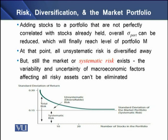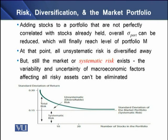However, the market or systematic risk still exists in the portfolio because the variation and uncertainty of macroeconomic factors affects all risky assets and cannot be eliminated. In the diagram, the vertical axis shows standard deviation or riskiness of returns, and the horizontal axis shows the number of stocks in the portfolio. As we add stocks, riskiness decreases but at a certain level it may not go down further due to macroeconomic factors.